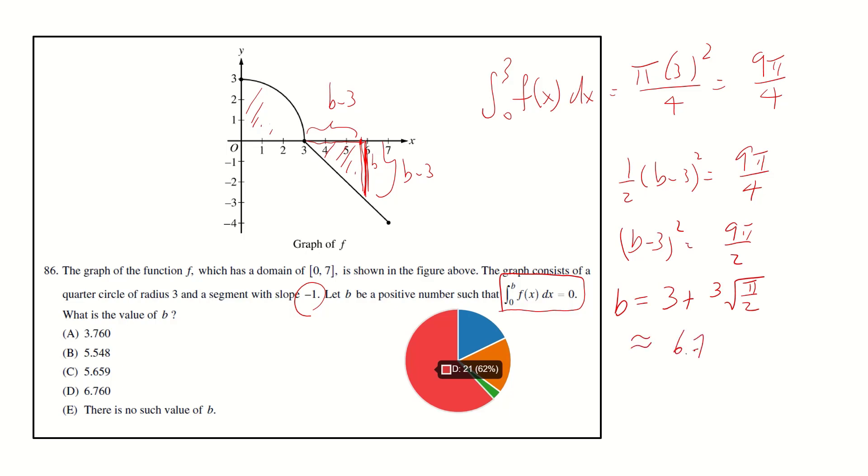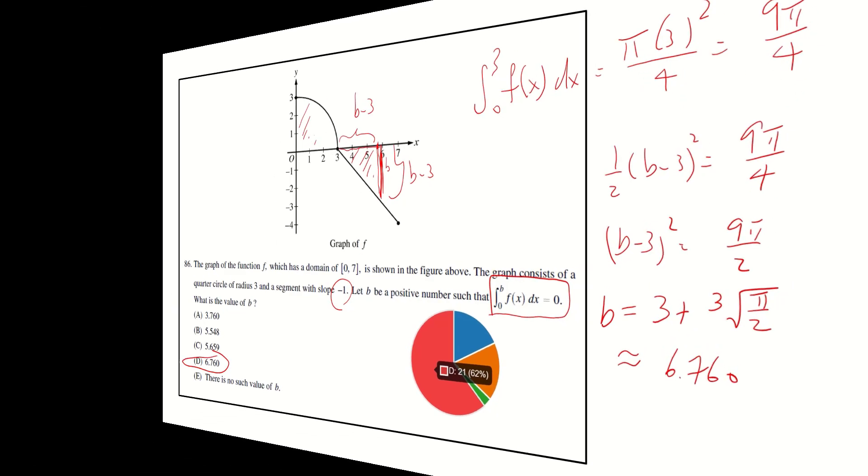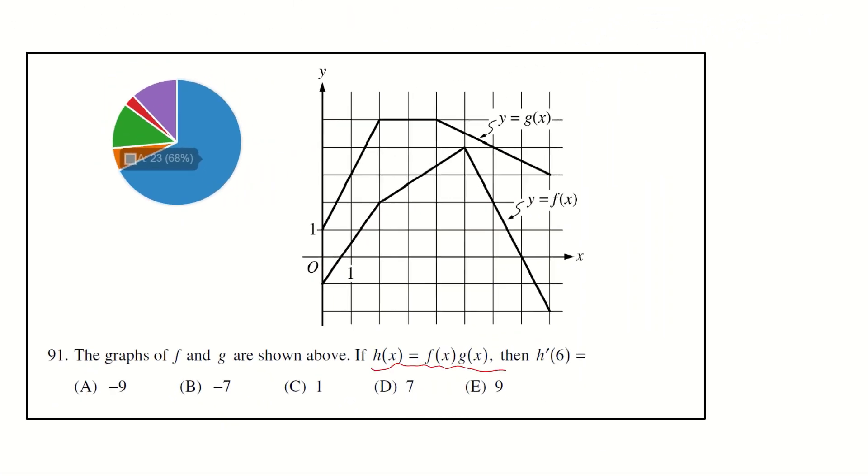This is about the product rule. h(x) equals f times g. h prime x equals f(x) g prime x plus f prime x g(x). h prime 6 is therefore f of 6 times g prime 6 plus f prime 6 times g of 6. f of 6 and g of 6 equals 4.